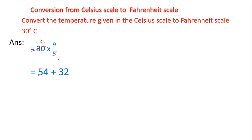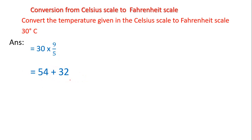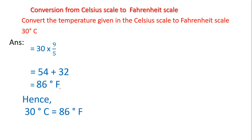First we do the cancellation: 5 goes into 30 six times, so 6 into 9 gives us 54. I wrote 54 here. Then I add 32 to the product: 54 plus 32 gives us a sum of 86 degrees Fahrenheit. So 30 degrees Celsius is equal to 86 degrees Fahrenheit.